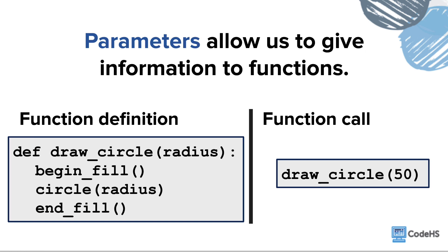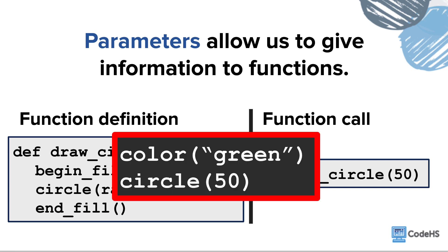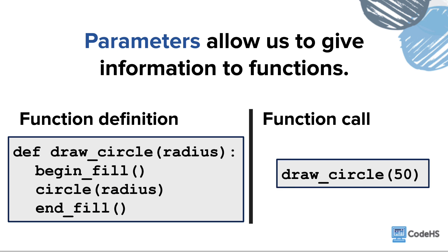Parameters allow us to give information to functions that we can then use inside the function commands. You've actually been using parameters every time you call a command with a value inside the parentheses, like the color or circle commands. Now, using parameters can get a little complicated, so let's just focus on calling functions with parameters, and we'll look at how to define functions with parameters in a bit.